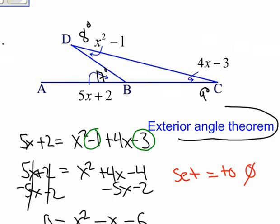Well, let's check it with the exterior angle theorem. Is 9 plus 8 equal to 17? Yes, it is. It checks out. So I'm done.